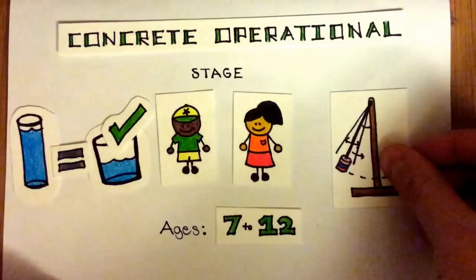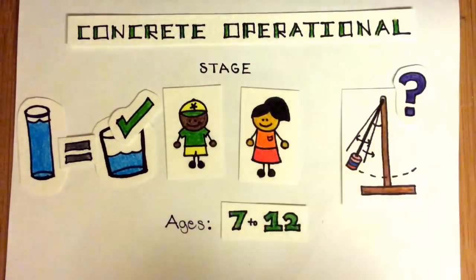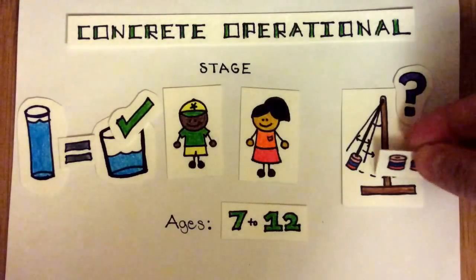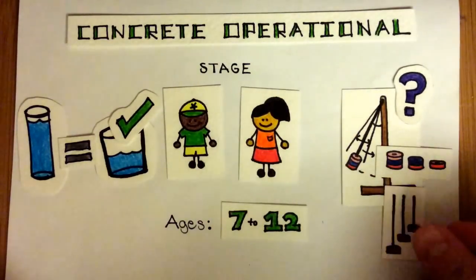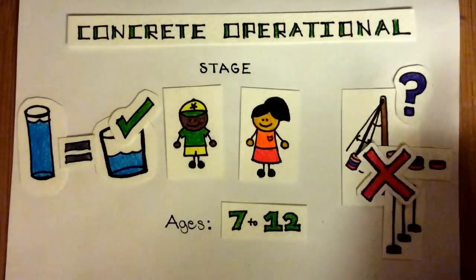For instance, if asked to determine what factors affect the period of a simple pendulum, children will often not correctly isolate the different independent variables of weight, initial angle of release, and string length. Instead, they allow their trials to be biased by their initial opinion and often conflate two of the variables.